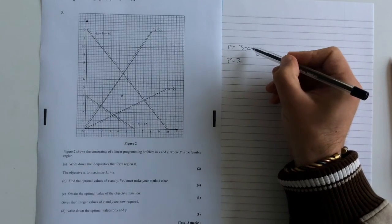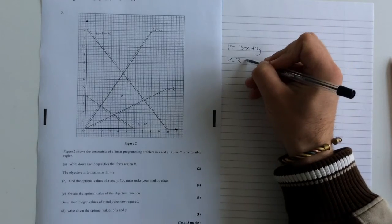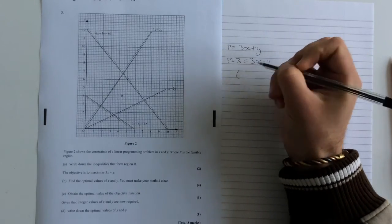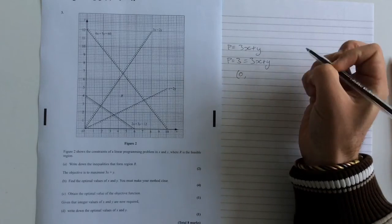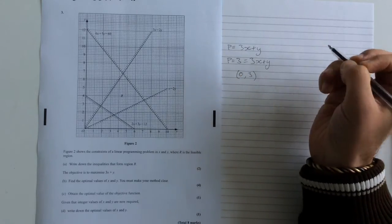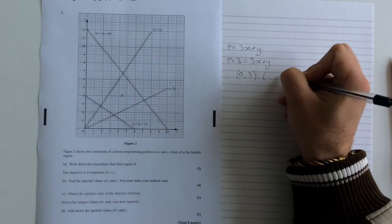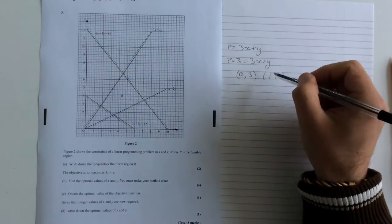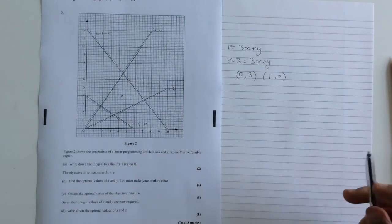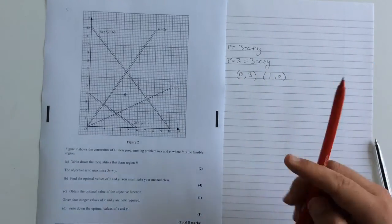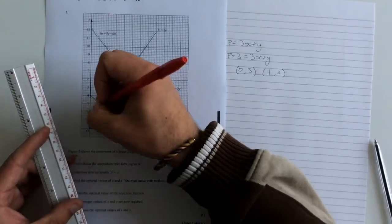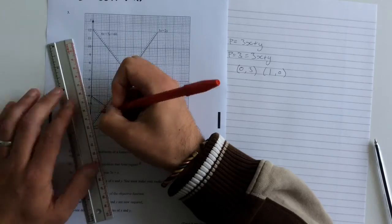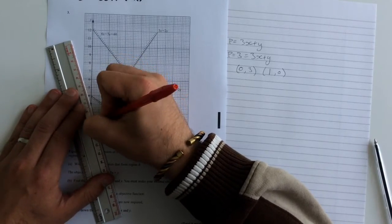And then what I'll do is I'll choose values of x and y that satisfy this equation. So if 3 is equal to 3x plus y, then one set of solutions I could have. I could have x being 0, which would make y 3. Or I could have y being 0, which would make x 1. And what that does is it gives me the end points of an objective line. So what I'm going to do now is plot that line. So this is 0, 3, and 1, 0. And there is my objective line.